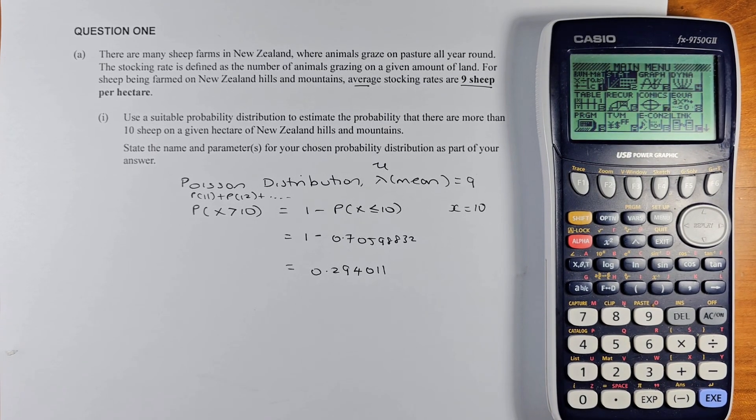Good day and welcome to video number one of the 2023 NCEA Level 3 Statistics Paper called Applied Probability Distribution to Solve Problems. So without further ado, let's do question 1A of this exam paper.